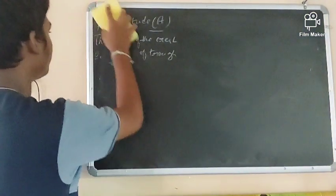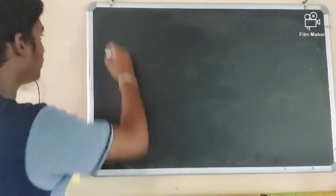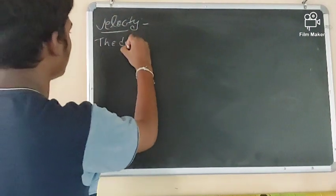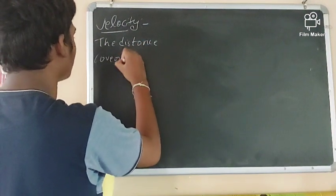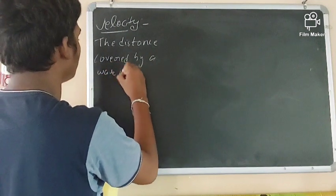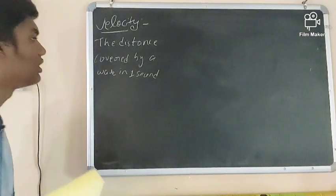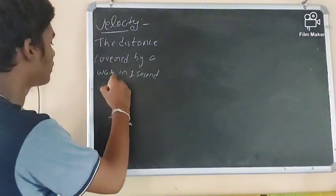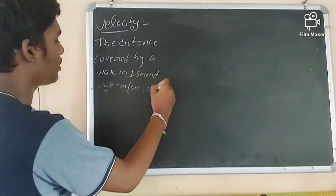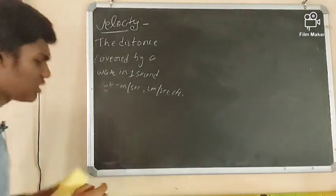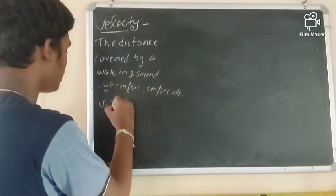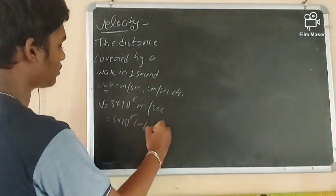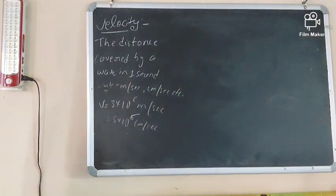Now let us discuss velocity. The distance covered by a wave in one second is called velocity. Its units are meters per second or centimeters per second. The velocity for any electromagnetic radiation is the same: v = 3 × 10⁸ m/s, or 3 × 10¹⁰ cm/s.